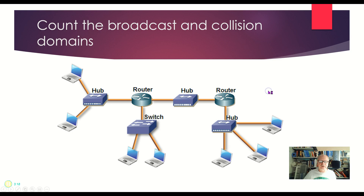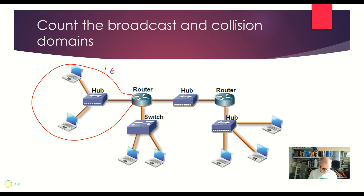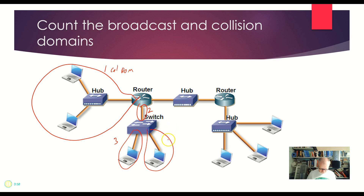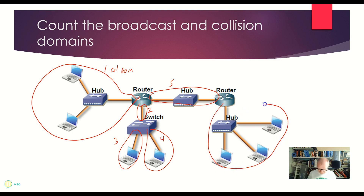That one's a little trickier, but let's use that same network and identify all of the collision domains. I'm going to look down at my tablet again. We have a router — hubs do not separate collision domains — so we have one collision domain here. Down here we have a switch; switches and routers both do separate collision domains, so I've got one right here — that's number two. Switches separate collision domains, so this is its own — number three — and this is its own — number four. Hubs do not separate them but routers do, so right here is one collision domain — that's number five. Again, routers separate them but hubs do not, so all of these are on one collision domain — six. So I've got six collision domains in this diagram.